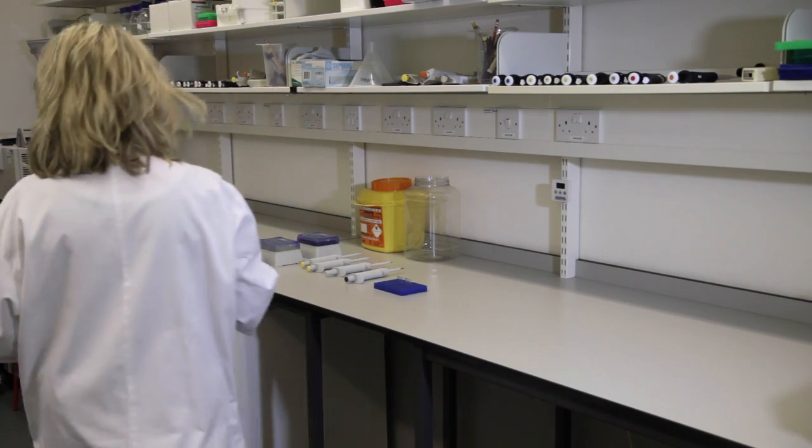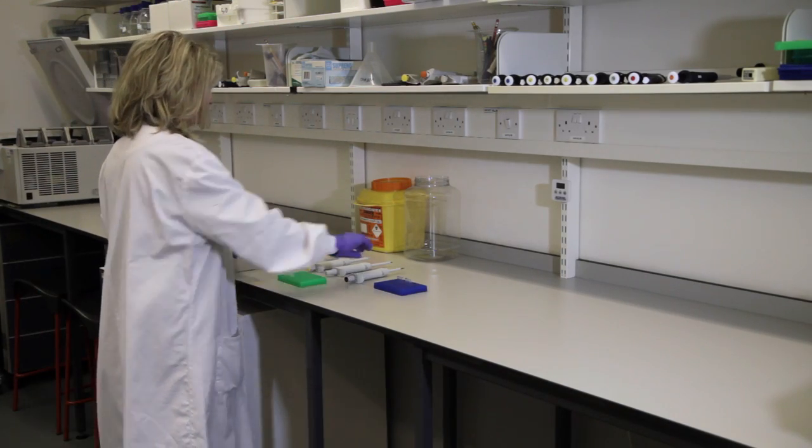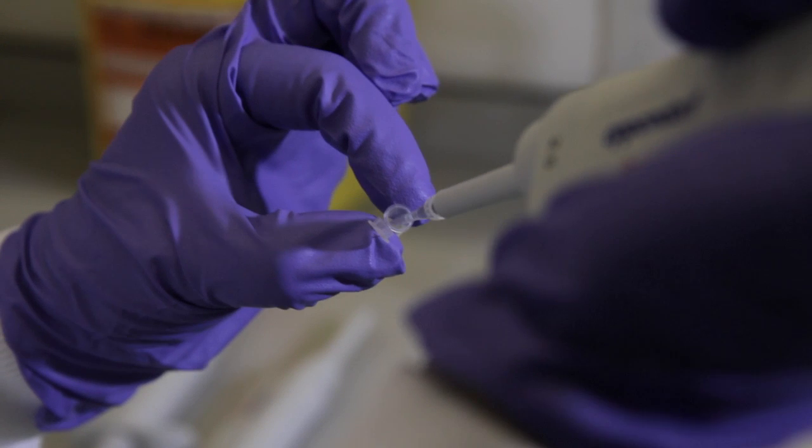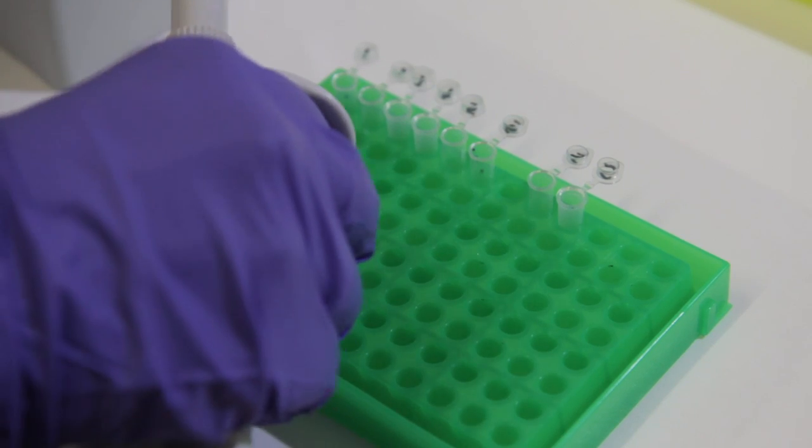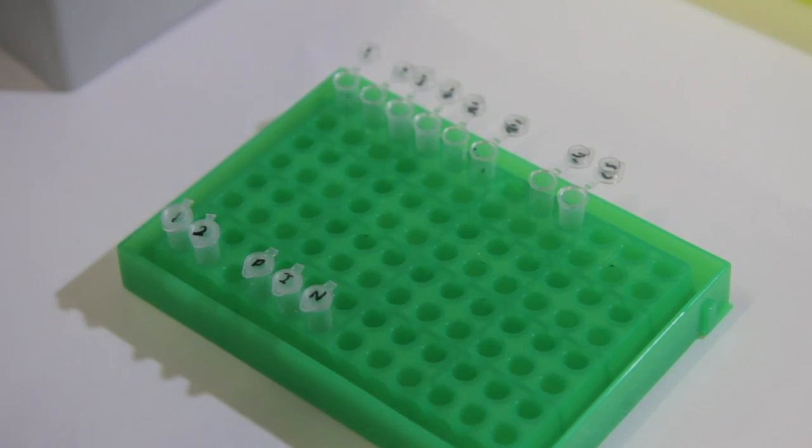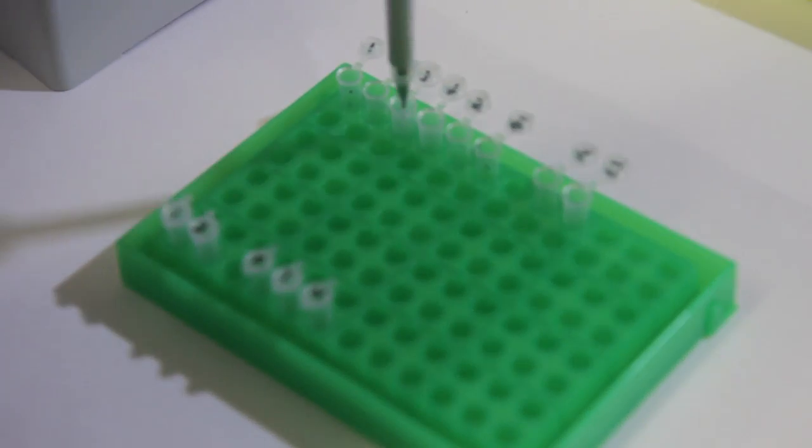In the extraction lab, add 1 microlitre of your template DNA or control material. Use water for a negative control, a known positive extract for your positive control, and a positive control that has been taken through your extraction procedure to control for inhibition.